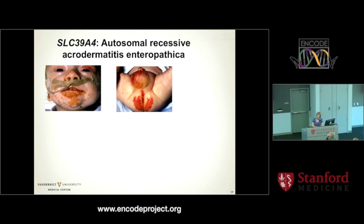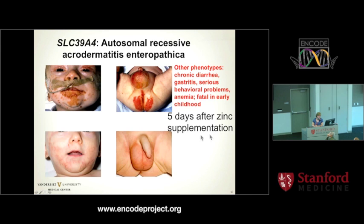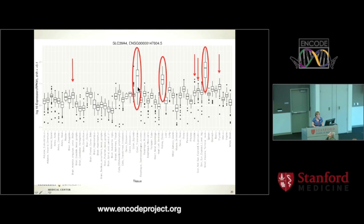To drive home a surprising new idea with respect to translation in the common variant spectrum, I want to focus on a zinc transporter that's a cause of autosomal recessive acrodermatitis enteropathica. This blistering skin condition around all body openings, combined with chronic diarrhea, gastritis, serious behavioral problems, and anemia, was fatal in early childhood — by four or five years of age — until the gene was cloned and found to be a zinc transporter. Five days after zinc supplementation, the rash clears. Within a week, the diarrhea and gastritis clear. The behavioral problems are reported gone within the first month. Here's a Mendelian disease where we have an effective therapy.